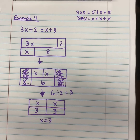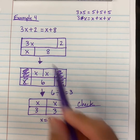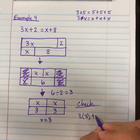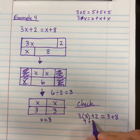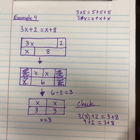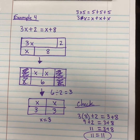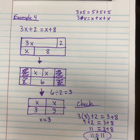We can check and see if we got this correct — it's always good to proof our work. So we substitute 3 in for x in our original equation. We have 3 times 3 plus 2 is equal to 3 plus 8. 3 times 3 is 9, plus 2 is equal to 3 plus 8. 9 plus 2 is 11, and 3 plus 8 is also 11. So 11 is equal to 11. We have the correct answer because after checking our work, we plugged it back into our original equation and got a true statement.